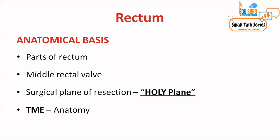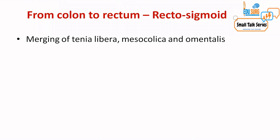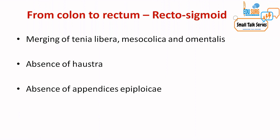Going from colon to rectum, the taeniae disappear — there is merging of taenia libera, taenia mesocolica, and taenia omentalis. There are no haustrations in the rectum — that is how you can identify this area. There are no appendices epiploicae as in the rest of the colon. Up to the sacral 2 or 3 level, that is up to the beginning of the sacral hollow, is the intraperitoneal portion of the rectum.